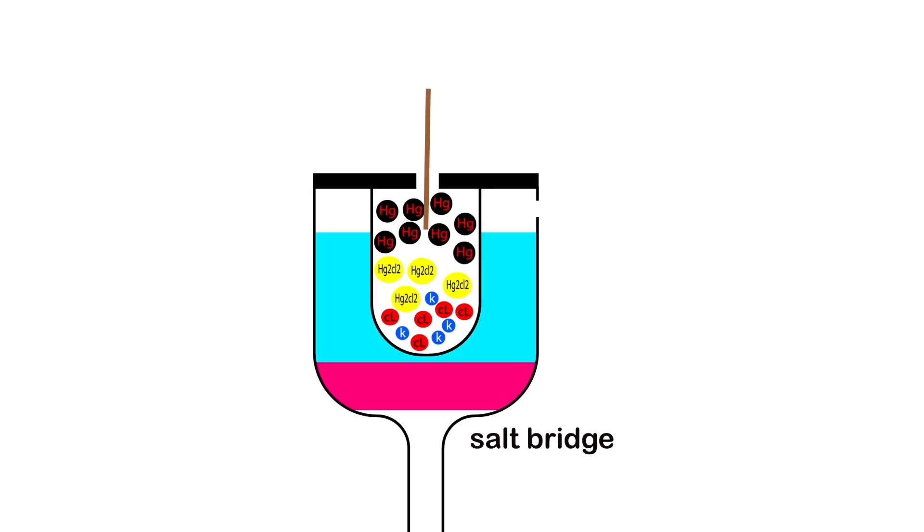This electrode is a second type electrode, because the reaction occurs between the sparingly soluble salt and the ions of the solution. Unlike the first type, the reaction occurs between the metal itself and its ions.